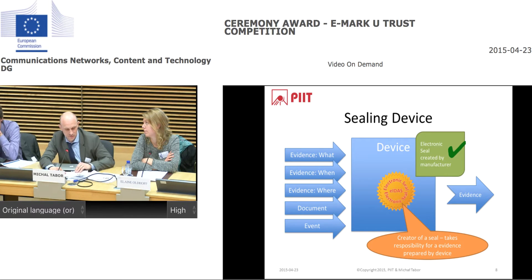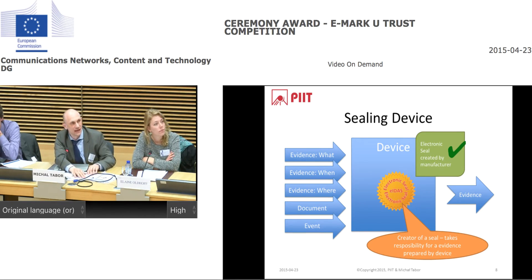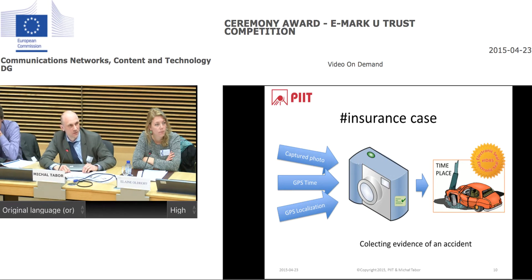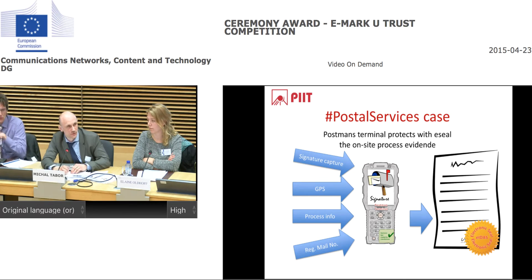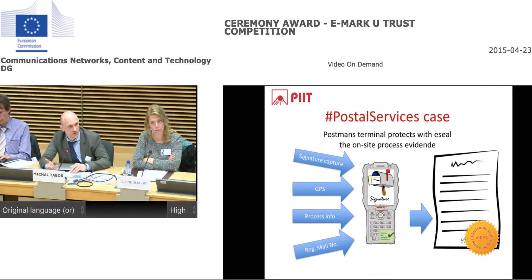Evidence prepared by such a device can secure a business process or be part of other trust services. For example, a digital photo camera with an electronic seal allows us to collect evidence from an accident. We can also make solutions like an insurance agent app to collect evidence from an insuring process, seal it, and produce a final insurance contract. For postal services, we can use postmen's terminals to protect evidence from the delivery process and other processes during delivery.